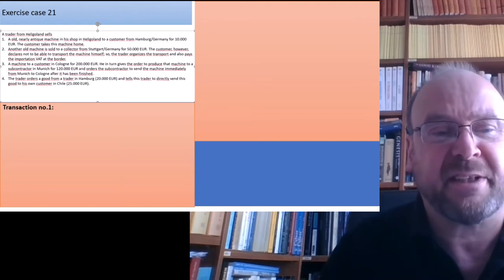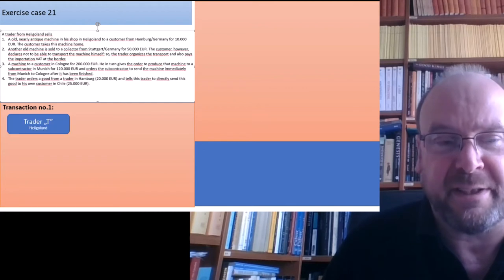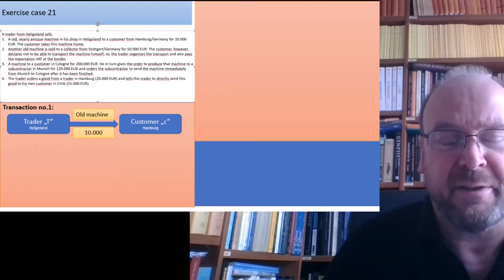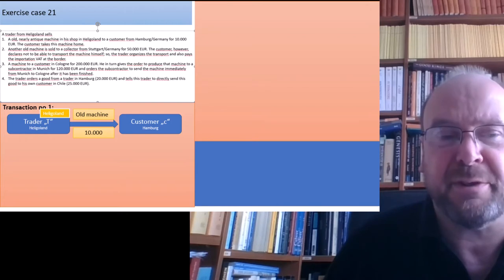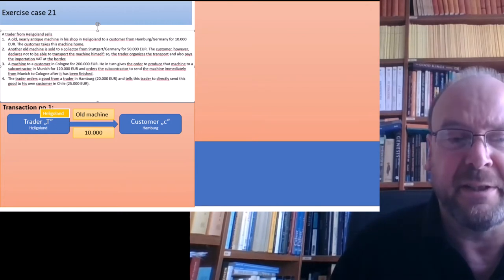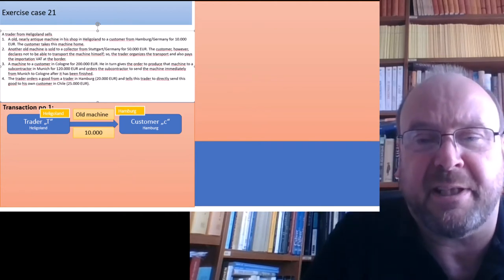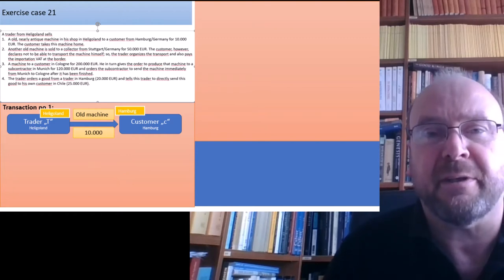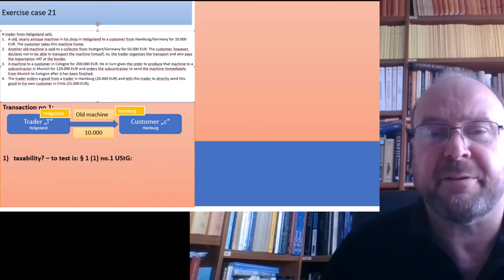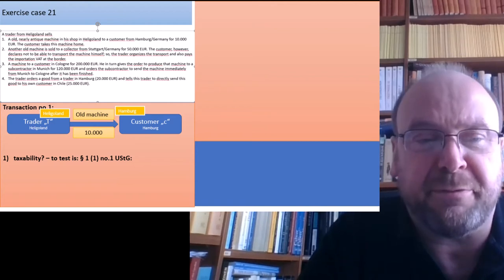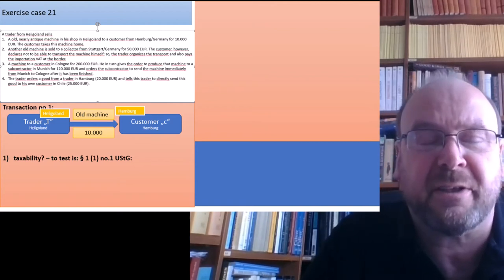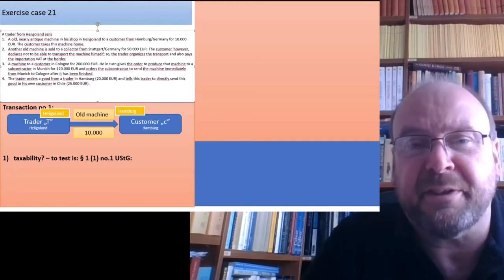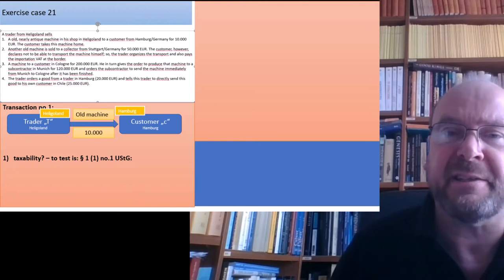Let's begin with transaction number one. Trader T from Heligoland sells to customer C — an old machine, price 10,000 — and the good moves from Heligoland to Hamburg. For taxability we have to test §1(1) Nr.1 UStG. The importation VAT under Nr.4 is handled by customs authorities, so in a tax or accounting department we only have to track §1(1) Nr.1, or later Nr.5, but not Nr.4.